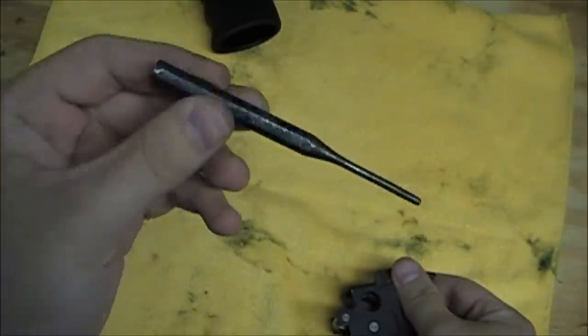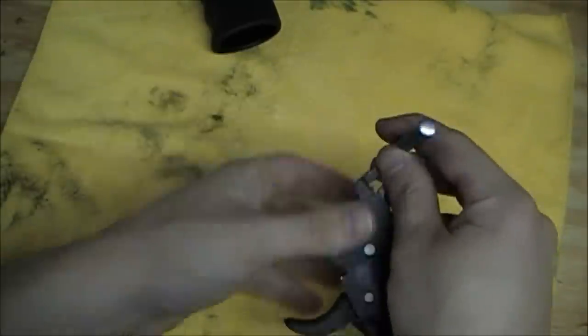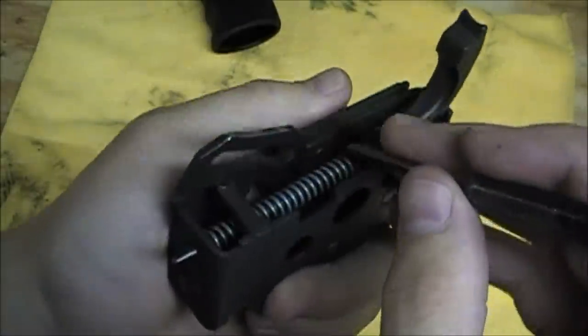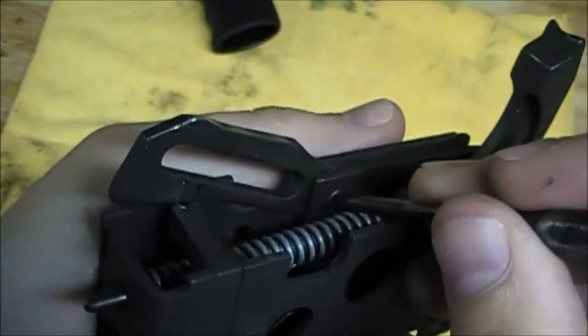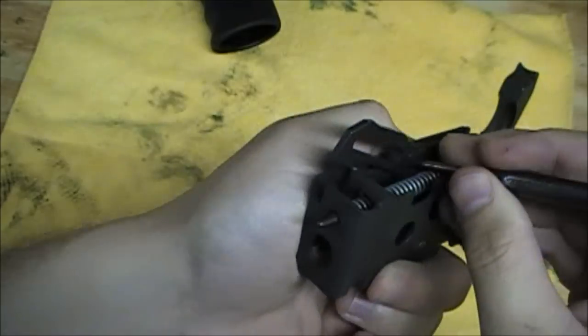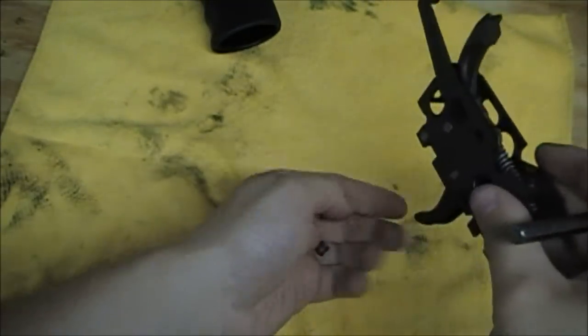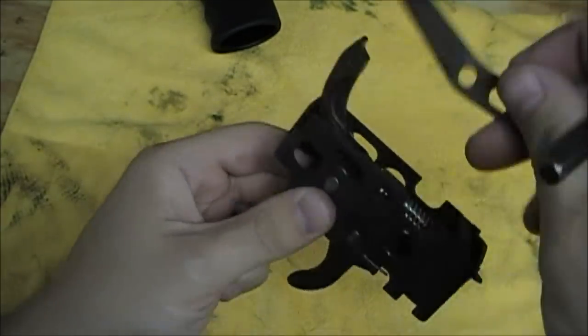You'll need a small punch, you won't need a hammer, just hand force. First, I start by taking out the ejector pin, which is right here, just push it a little from the inside, it pops out, your ejector will then lift out of the frame.